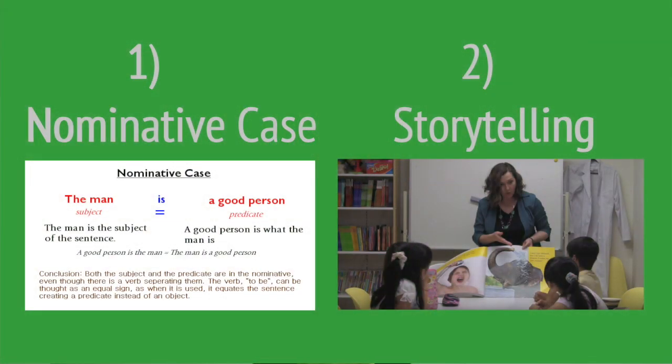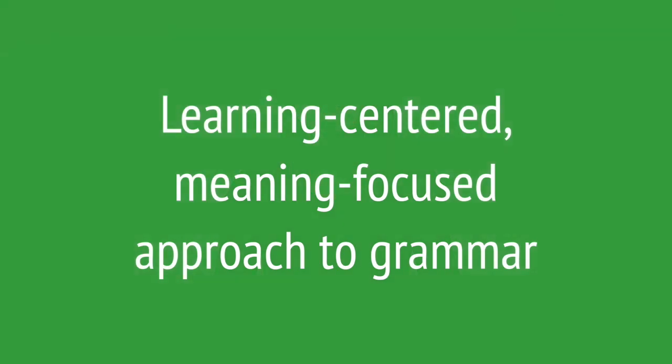Now let's review what we learned. What kind of approach should we take to teach young learners English as a foreign language? Which lesson would be more effective? The storytelling lesson will be more effective with young learners because it takes a learning-centered, meaning-focused approach to grammar. You can make it more effective by using visuals, gestures, and adjusting your speaking to make the language comprehensible. This will help you build an English-speaking environment in your classroom. Try it and you'll see.